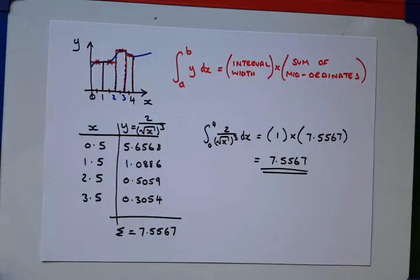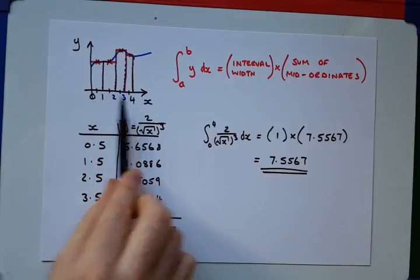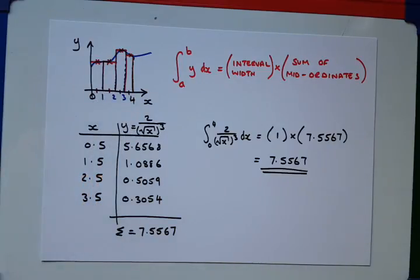Effectively, the width of our little rectangles are less, so we can get more and closer and closer and closer to the curve. So, that's the mid-ordinate rule. You take the area that you want to integrate over, find the integral of, divide it into equal strips, equal intervals, all with the same width.